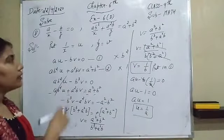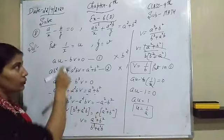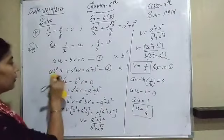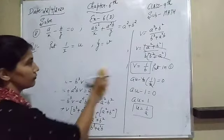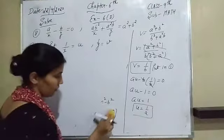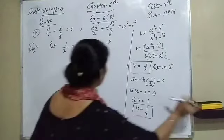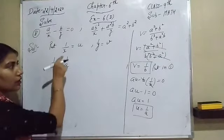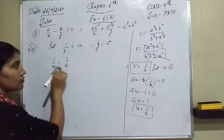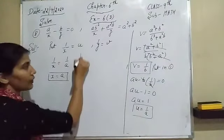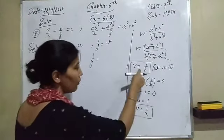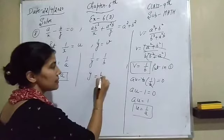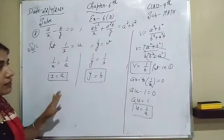So the value of u is 1/a. Now we back-substitute: since 1/x equals u equals 1/a, cross-multiplying gives x equals a. And since 1/y equals v equals 1/b, cross-multiplying gives y equals b. Those are our required answers: x = a and y = b.